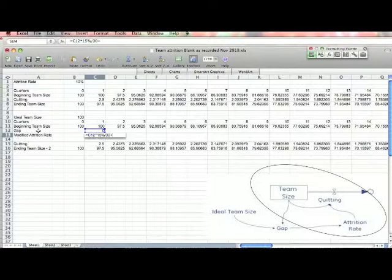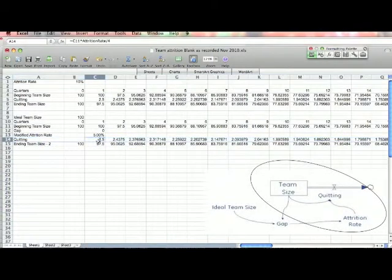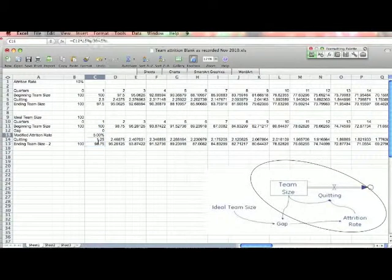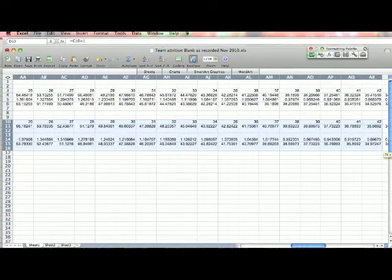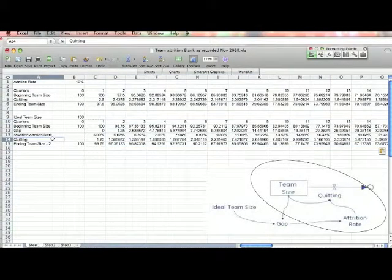So in this first period the attrition rate is 5% because there is no gap. You'll see that will change. Then quitting now is the beginning team size times the modified attrition rate, divided by 4 to make it quarterly. And that is it. We're going to copy this out. So that's our new model.